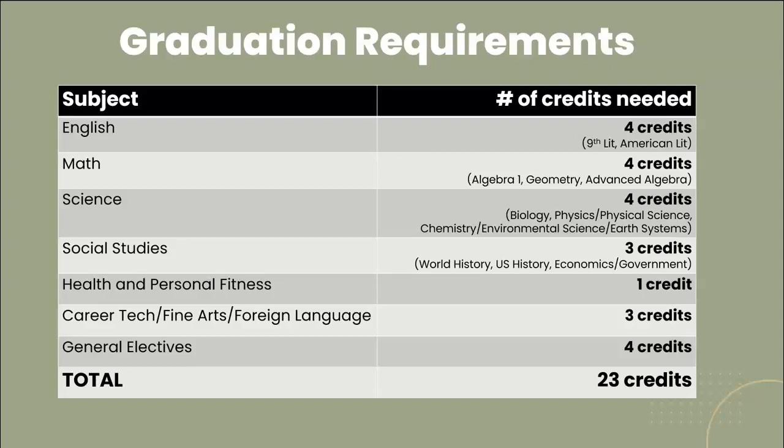Graduation requirements are always very important — this is something we cover with you every single year. You need 23 total credits to graduate. Of those 23, you need four English credits, and two of them must be ninth lit and American lit. You will also need four math credits. If you take foundations of algebra, that will count towards graduation but it will not count towards a college admissions math requirement. If you are looking to attend a four-year college after high school, you will need a math beyond advanced algebra, which used to be known as algebra 2. Foundations of algebra will meet the graduation requirements but will not meet college admissions requirements.